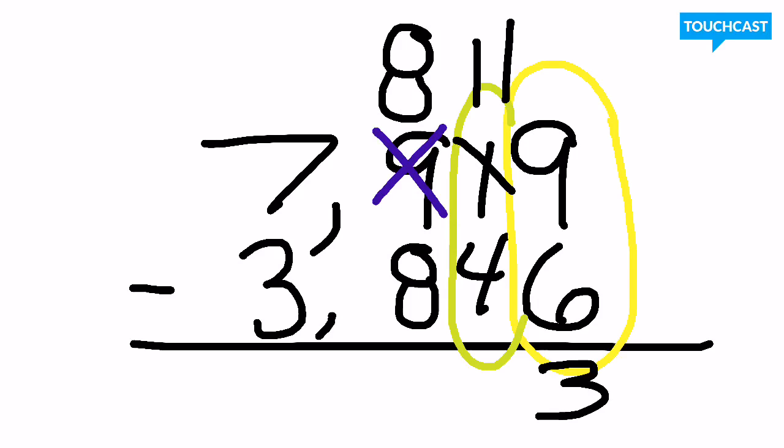From there with our math facts once again, we know 11 minus 4 is going to be 7.